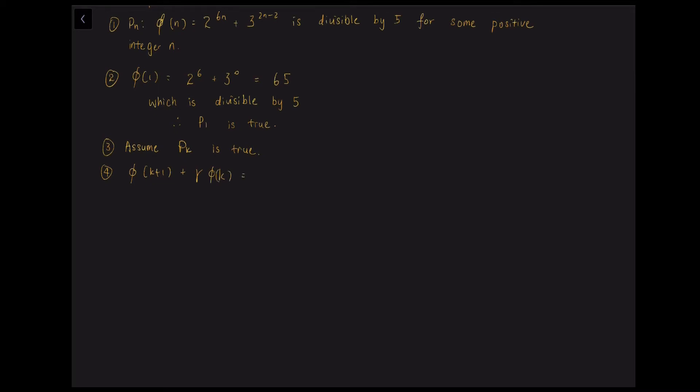2 to the power of 6 times k plus 1 plus 3 to the power of 2k plus gamma times phi k, which is 2 to the power of 6k plus 3 to the power of 2k minus 2. And then we know that 2 to the power of 6 is 64, 3 to the power of 2 is 9.